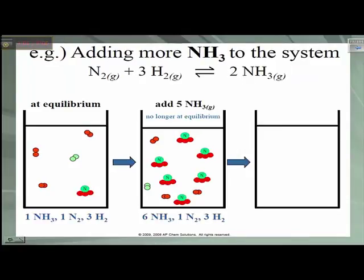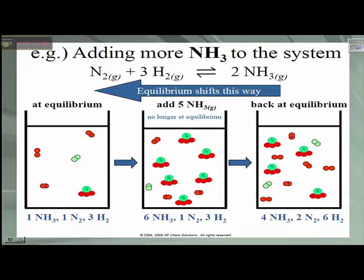If we add 5 moles of ammonia, the system is no longer at equilibrium — our Q value becomes something like 1.3. The 5 moles of ammonia were added, and the rate of the reverse reaction exceeded the rate of the forward reaction to use up some of the newly introduced ammonia until the system reestablishes its equilibrium with the same equilibrium constant. We shift our values until we get back to equilibrium.